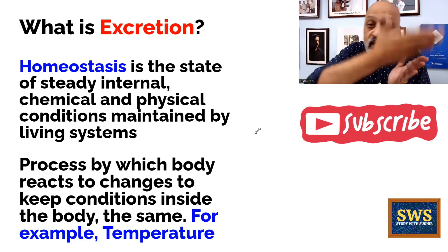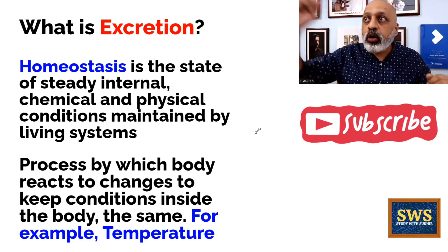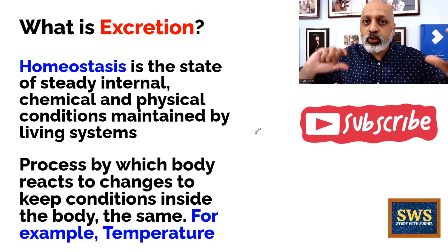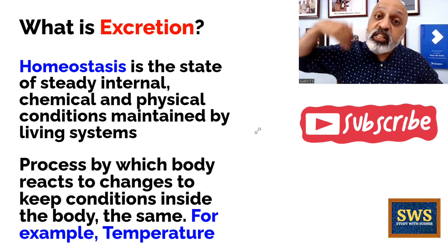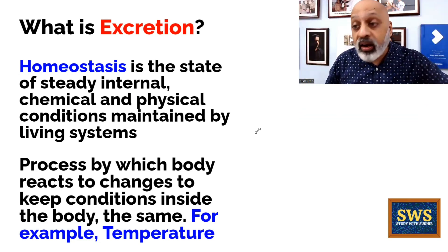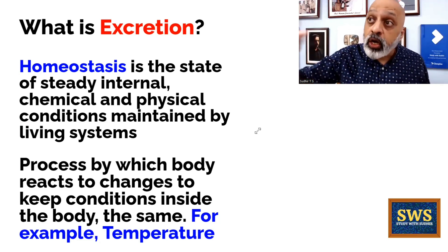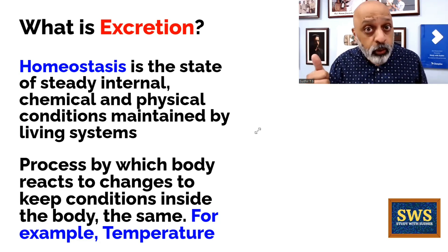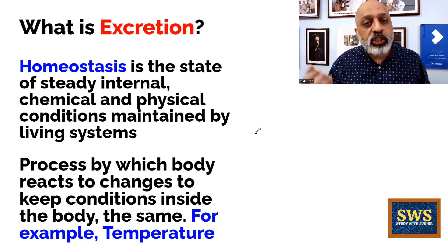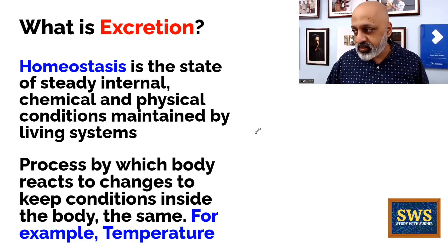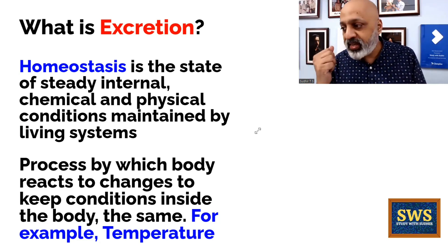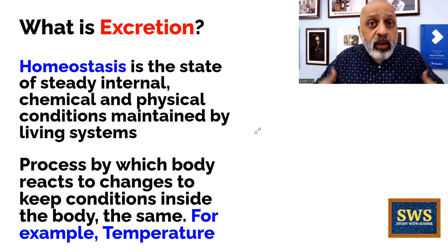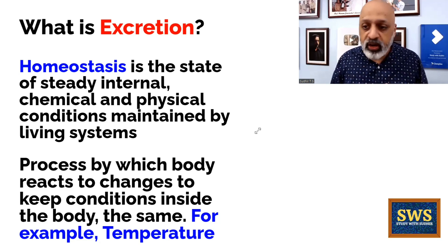No matter what happens in the outside world, your body maintains a certain equilibrium irrespective of whatever changes happen in the environment outside. So it is in response to the external environment. For example, body temperature regulation, blood pressure regulation, or blood sugar regulation — all of this comes under homeostasis. The internal temperature of the human body is the best example of homeostasis: the body maintains a particular temperature. That is something very important.